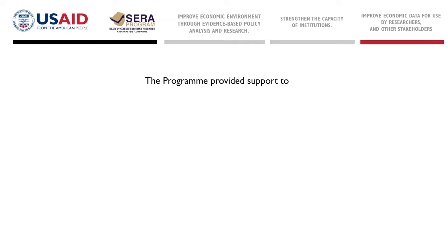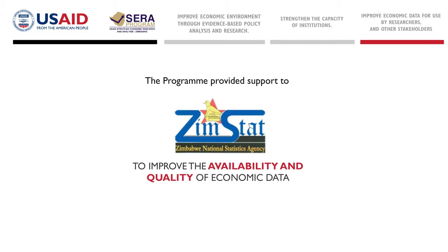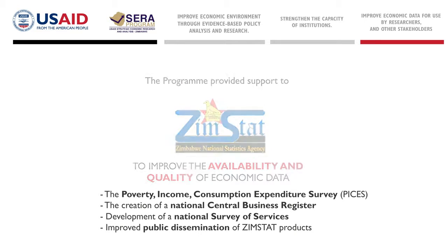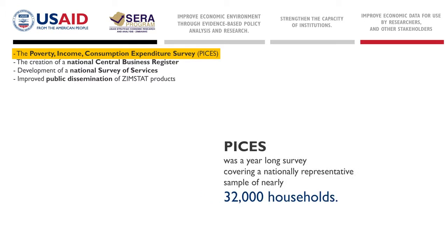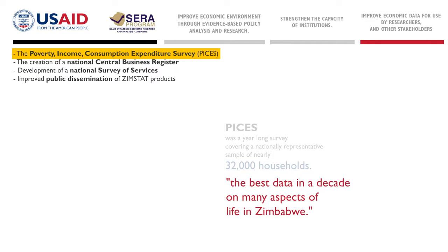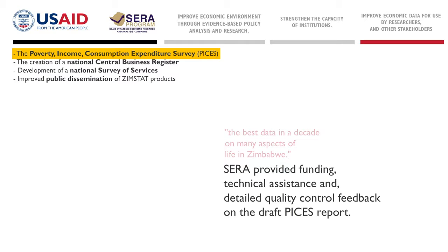The SARA program provided support to Zimstat to improve the availability and quality of economic data in four priority areas. PICES was a year-long survey covering a nationally representative sample of nearly 32,000 households, providing the best data in a decade on many aspects of life in Zimbabwe. SARA provided funding to help complete the survey, technical assistance for calculation of statistical weights, and detailed quality control feedback on the draft PICES report.